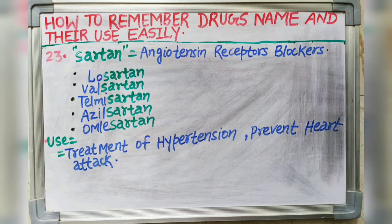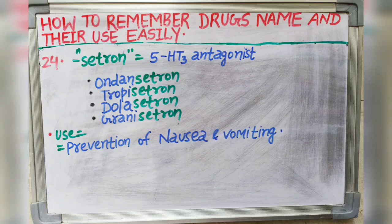Next suffix is -setron. It indicates 5-HT3 antagonists. Drugs like ondansetron, tropisetron, dolasetron and granisetron all end with the -setron suffix. It is used in the prevention of nausea and vomiting.